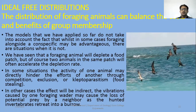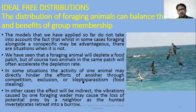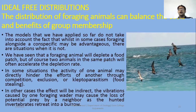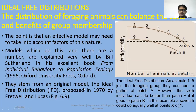What are ideal free distributions? The models applied so far do not take into account the fact that while foraging alongside members of other groups may be advantageous in some cases, in other situations it is not. In many situations, the activity of one animal may directly hinder the efforts of another — for example, through competitive exclusion or kleptoparasitism. An effective model may need to take into account factors of this nature.